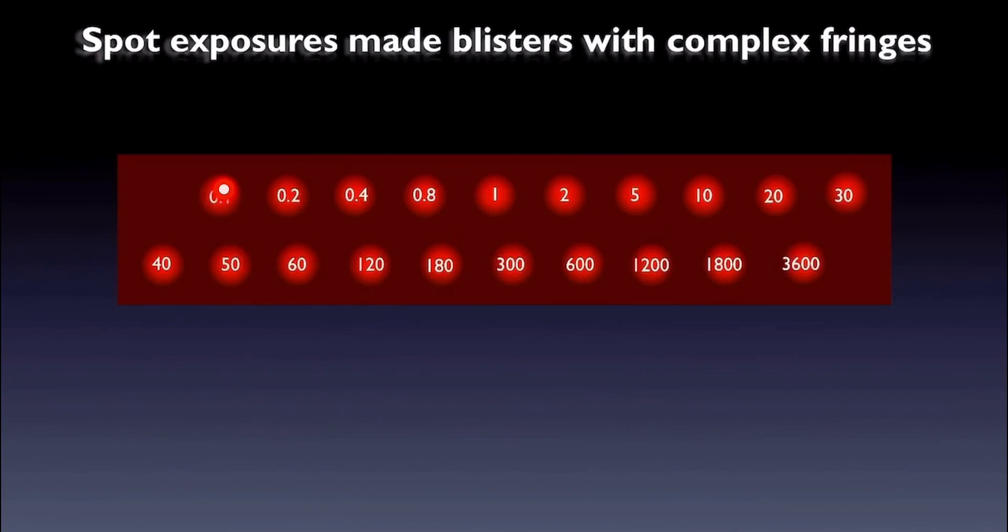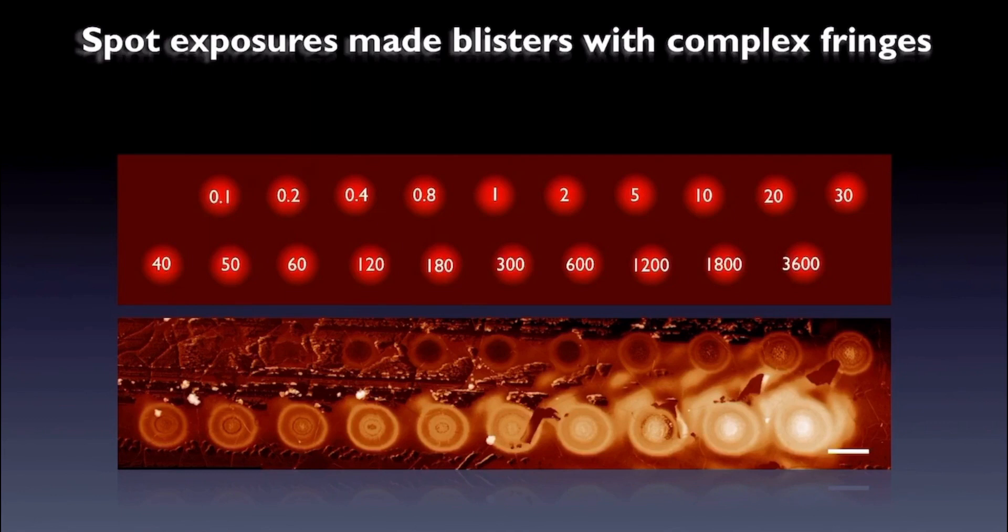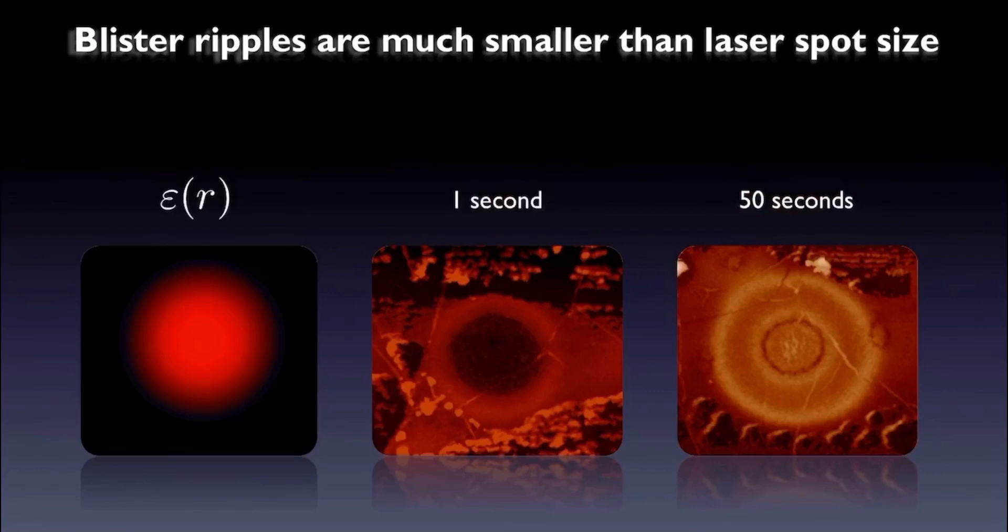And what we observed in AFM after this is shown here. Surprisingly, we don't observe simple bulging blisters, but instead blisters with complex rippling and very small features, as seen from this AFM image. Indeed, when we zoom closer, the ripple features in the blisters are seen to be an order of magnitude smaller than the laser spot size. So with optical forging, we can manipulate graphene rippling at length scales much below the diffraction limit. This is our main result.